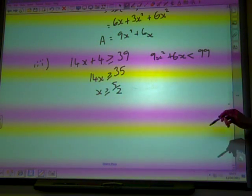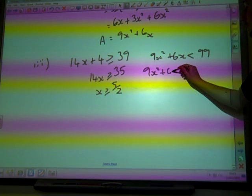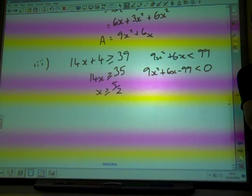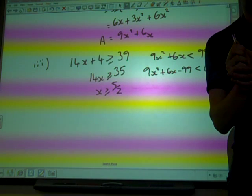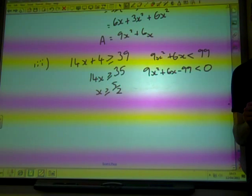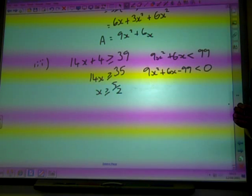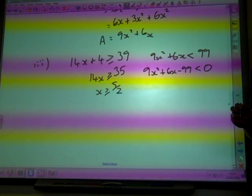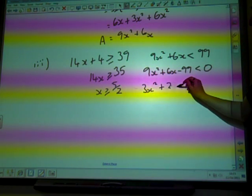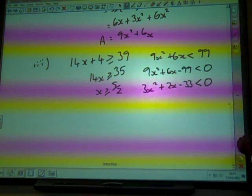We've got a quadratic inequality. We're going to take everything over to one side. 9X squared plus 6X minus 99 has to be less than 0. Before we try and factorize a quadratic, is there a common factor? Divided by 3. So that would be 3X squared plus 2X minus 33 is less than 0.